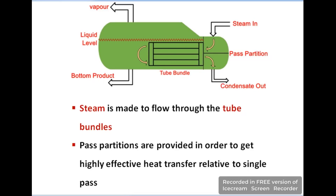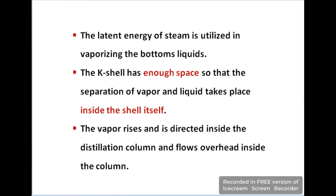Steam is made to flow through the tube bundle. In the diagram, you can see the steam entering the tube bundle. A partition is provided in order to get highly effective heat transfer. The steam running in the tube bundle provides latent energy, and that energy is transferred into the liquid which is outside the tubes in the K shell.